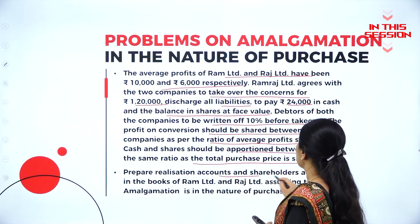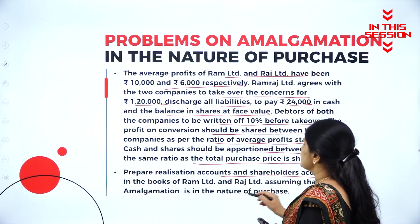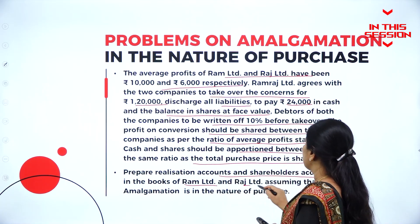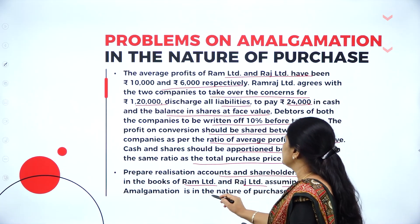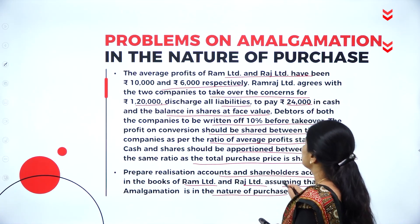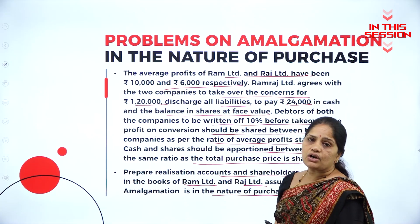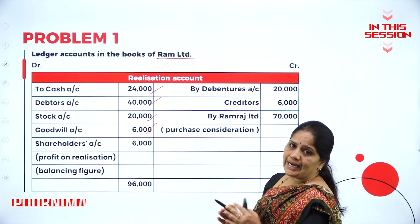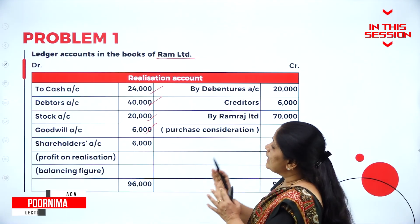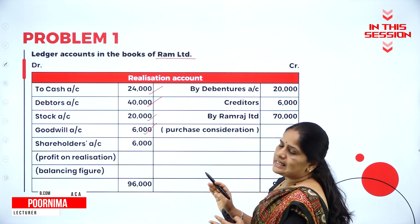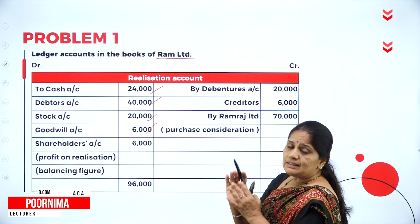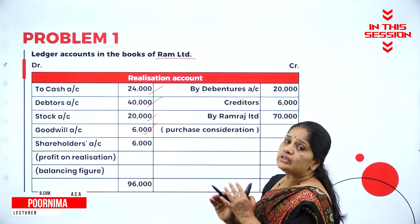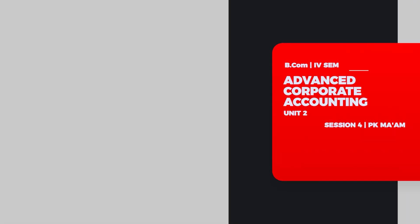Prepare realization accounts and shareholders account in the books of Ram Limited and Raj Limited, assuming that amalgamation is in the nature of purchase. Whatever is the balance sheet values, the same value we will write here. But while writing the purchase consideration, we have to take the agreed values.